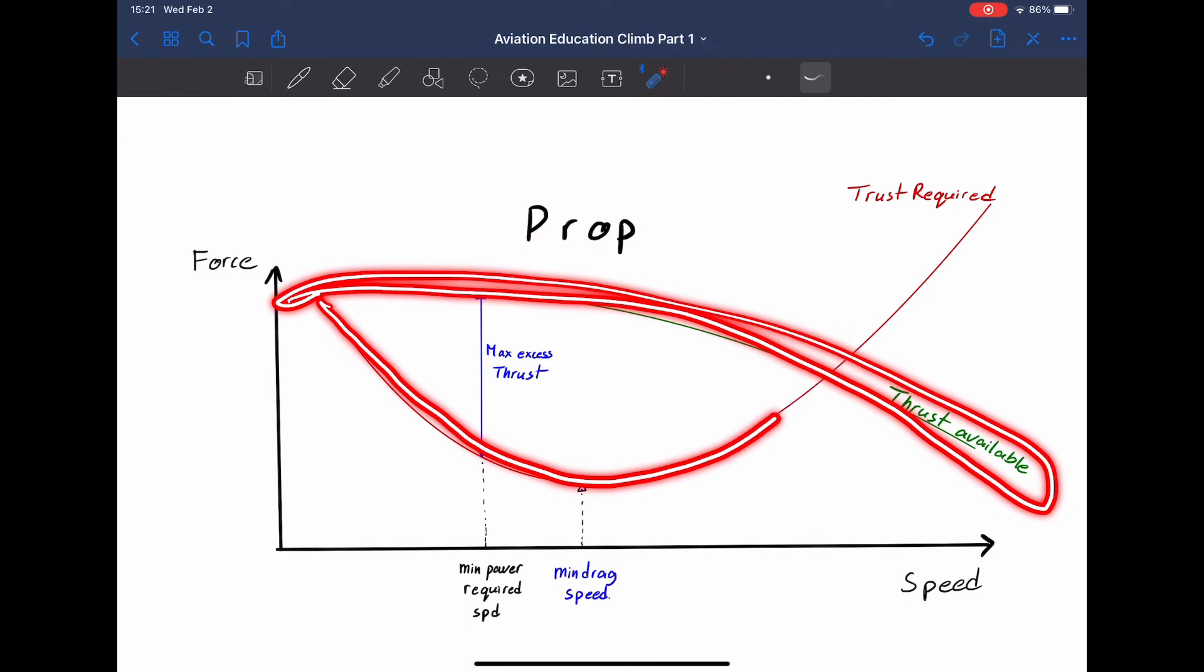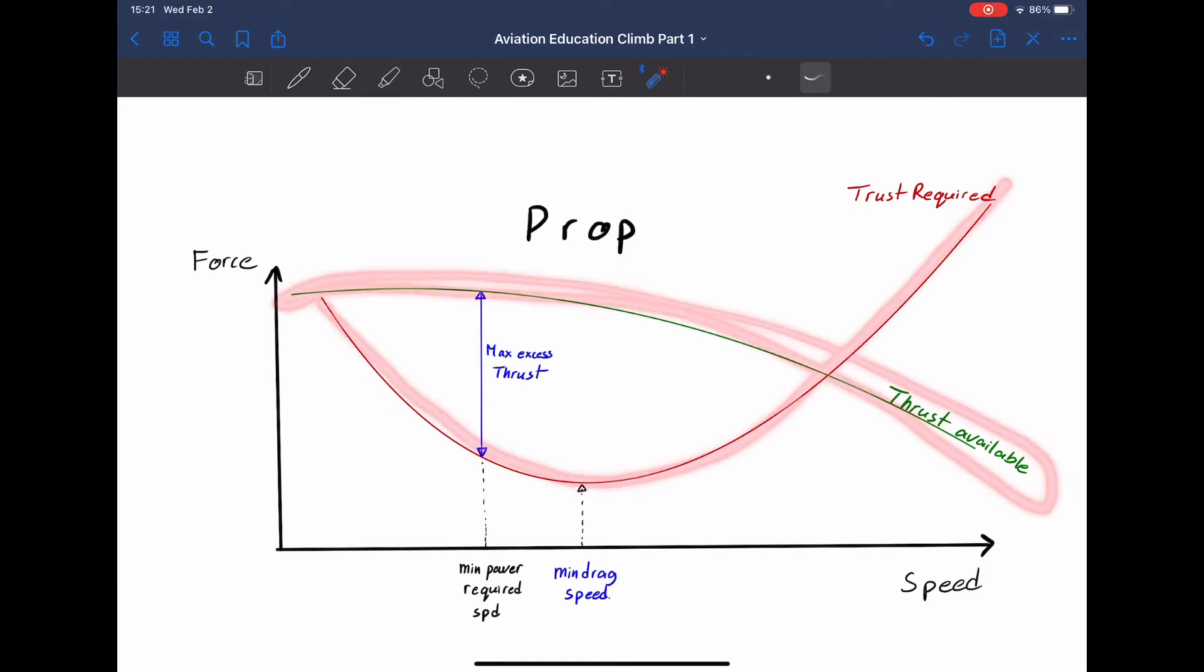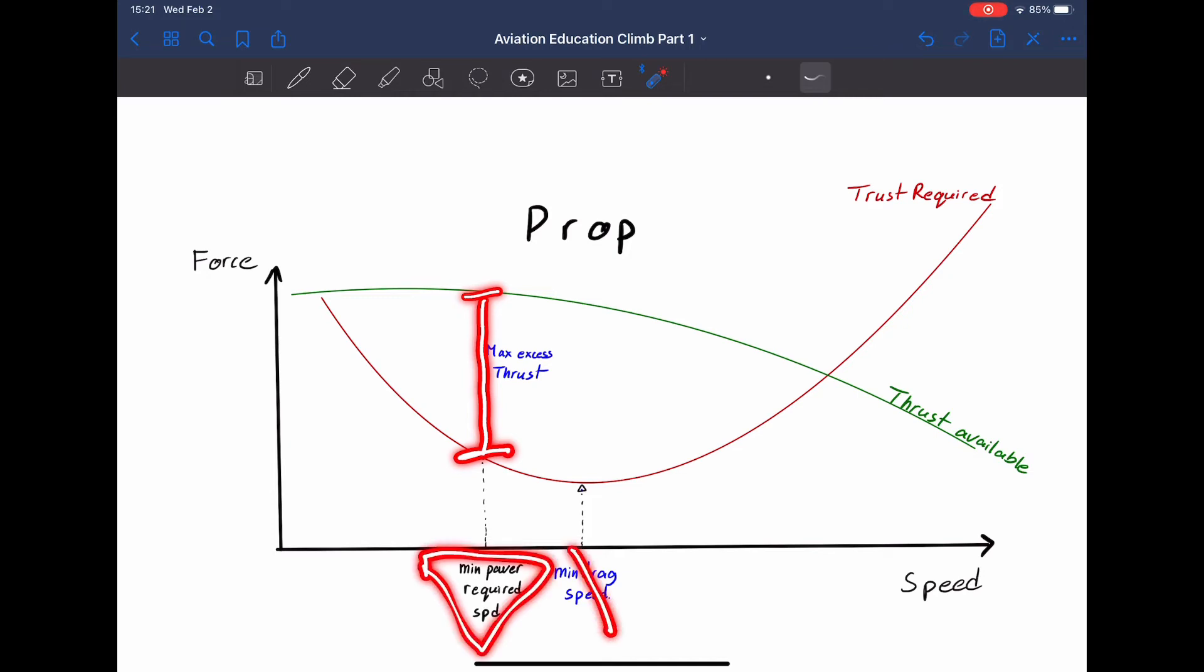Now, let's talk about the same thing, but for propeller airplanes. Just like before, the excess thrust is the area in between the thrust available and thrust required lines. I suppose the main thing you have to remember is that for propeller airplanes, the VX climb is located at min power speed versus jet, which is located at the min drag speed.